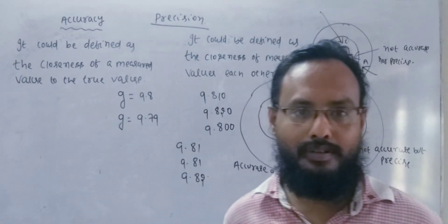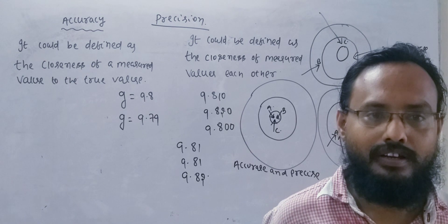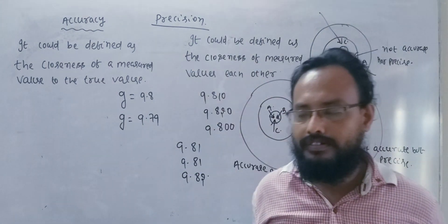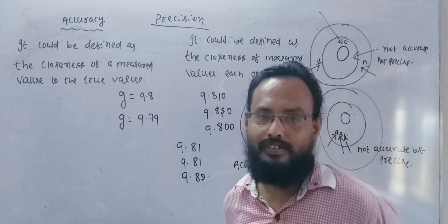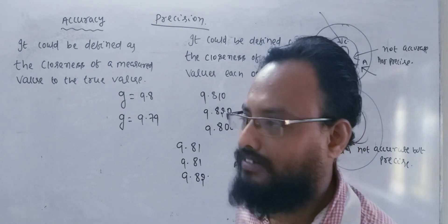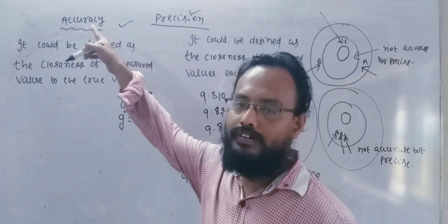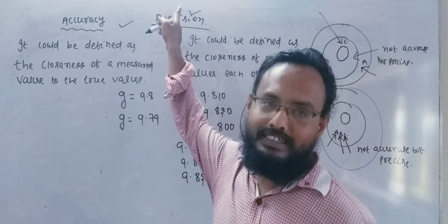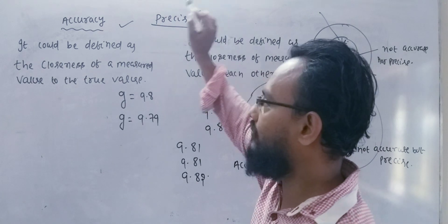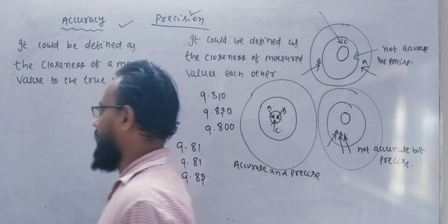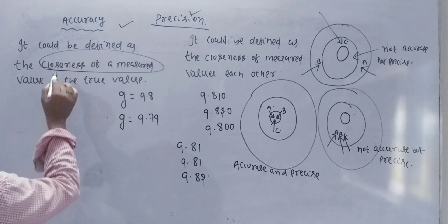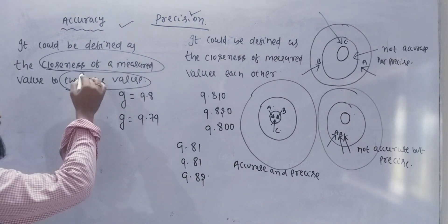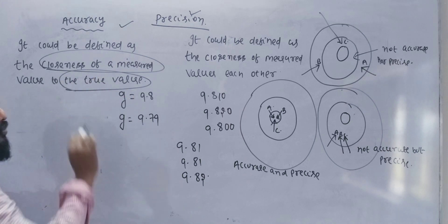Students, in the previous class we discussed significant figures and how to calculate significant numbers. Now we will discuss accuracy and precision. When the word measurement arises, the data must meet accuracy requirements. I will be accurate, I will be precise. Accuracy and precision — accuracy can be defined as the closeness of a measured value to the true value.